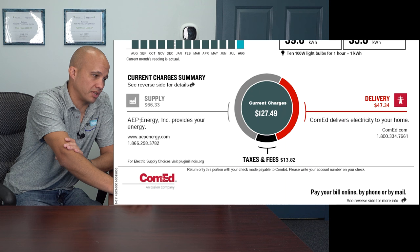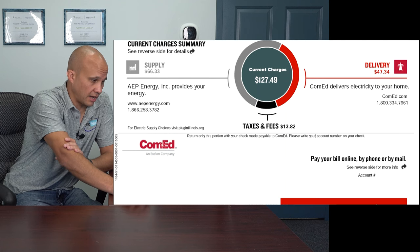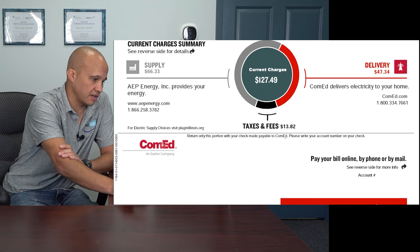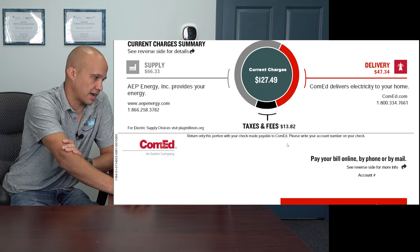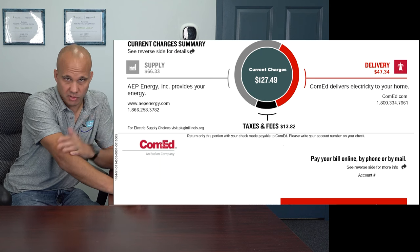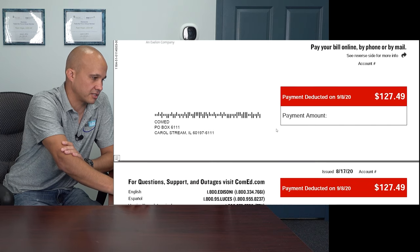I have AEP as my energy supplier and ComEd as my delivery company. You can see on my bill: 66 bucks went to AEP, 47 went to ComEd — 127 bucks total, which is a pretty low bill. I have a really awesome HVAC system. And then I have taxes and fees down here, another 13 to 14 bucks.